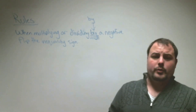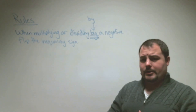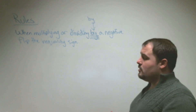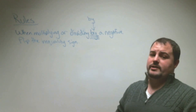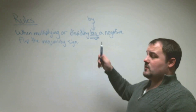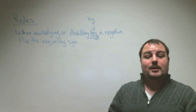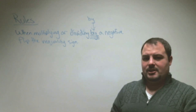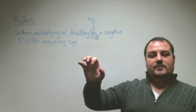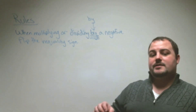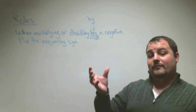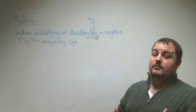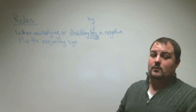One of the rules before we get going: when multiplying or dividing by a negative sign, your job is to flip the inequality sign. The key word is 'by' — when multiplying or dividing by a negative, flip the inequality sign. It doesn't mean a negative divided by a positive; it means when we take a number and divide it by a negative, we have to change the direction of the inequality sign.